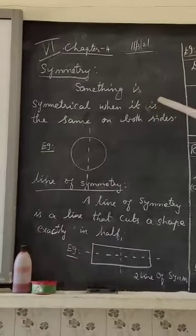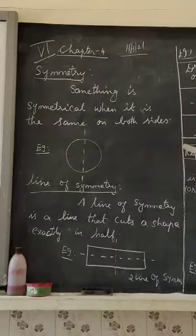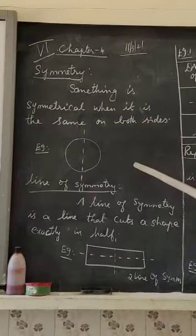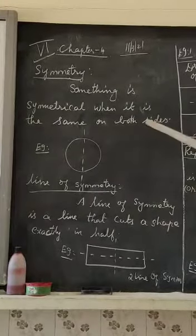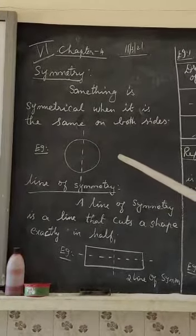See the first definition of symmetry. Something is symmetrical when it's the same on both sides. See the example of the circle. I am going to divide it into two parts. Both parts should be equal and the same.